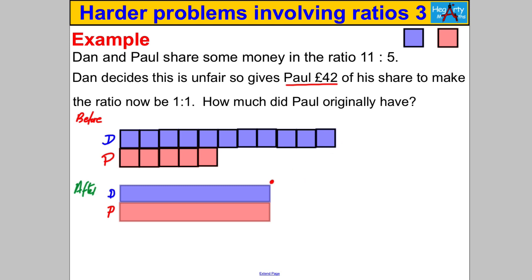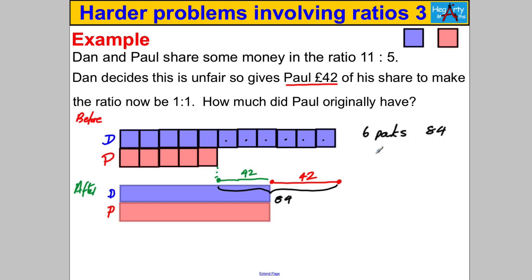The distance representing Dan's decrease is worth 42. But Paul also received that 42 pounds, so Paul's has increased by 42 as well. In total, from one end to the other is 84 — that covers six boxes in the original, so six parts must be worth 84. Dividing 84 by 6 gives 14, so 14 is what goes in each box.